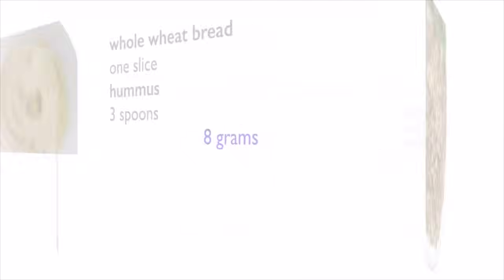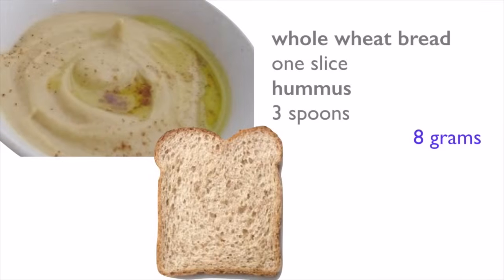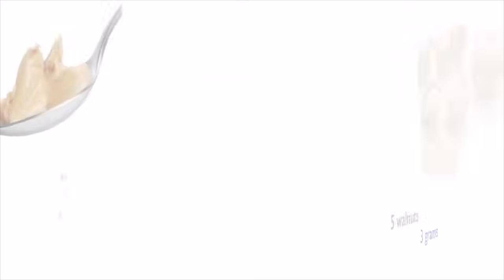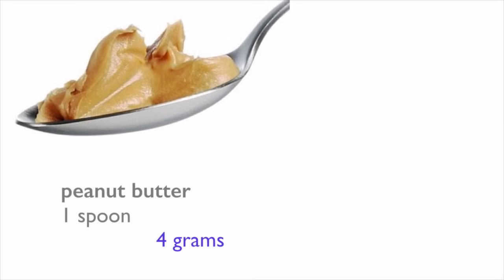A slice of whole wheat bread with three tablespoons of chickpeas hummus provides eight grams of high quality proteins. There are three grams of proteins in five walnuts. There are four grams of proteins in a tablespoon of peanut butter.